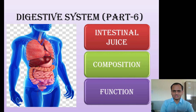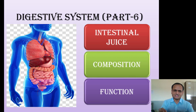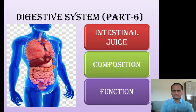When food enters the duodenum, it mixes with pancreatic juice. In the duodenum, two types of secretions are received: one is pancreatic juice and the second is biliary juice or bile. Several juices are secreted into the alimentary canal. The last secretion to be discussed today is intestinal juice, and this video will be the last one covering the alimentary canal.